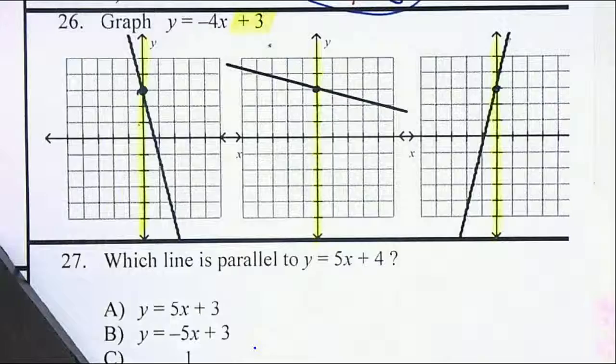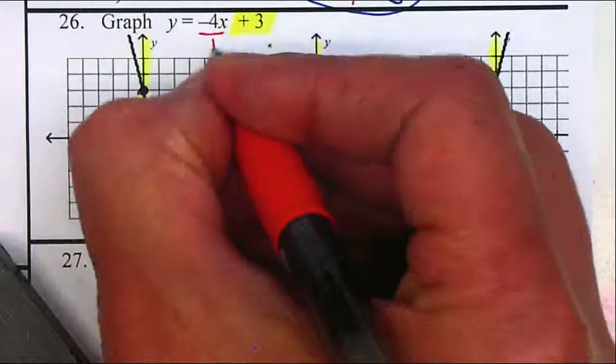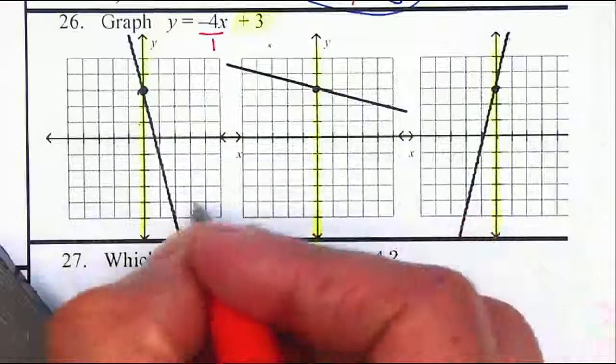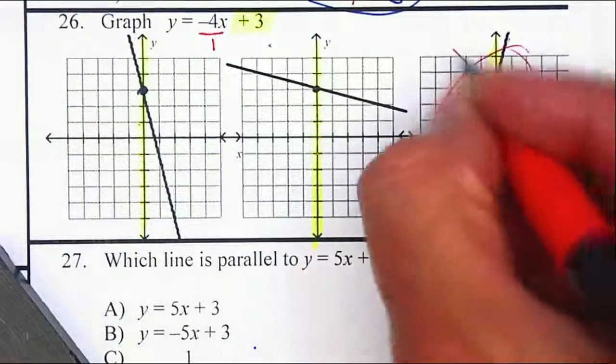Now my slope, I notice that's a negative slope. So my line should be going down. So that one's going down, that one's going down. That one's not it. It's going up.